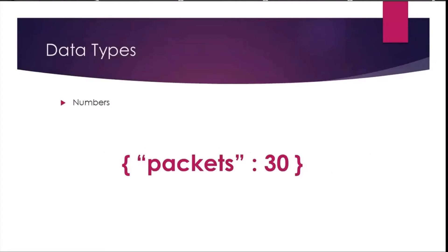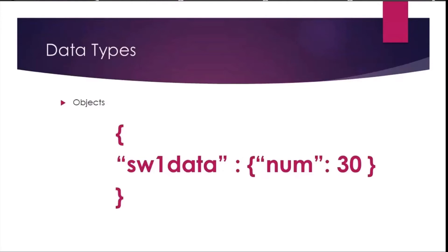The next type we could have is a number. Just as you might guess, a number is input in JSON with no quotes. Here I have a field name of "packets" and a number value of 30. We can also have a JSON object as a data type — curly brackets to start. The field name is "SW1 data," and then we have a JSON object with a field name of "number" and a value of 30 stored at that position.